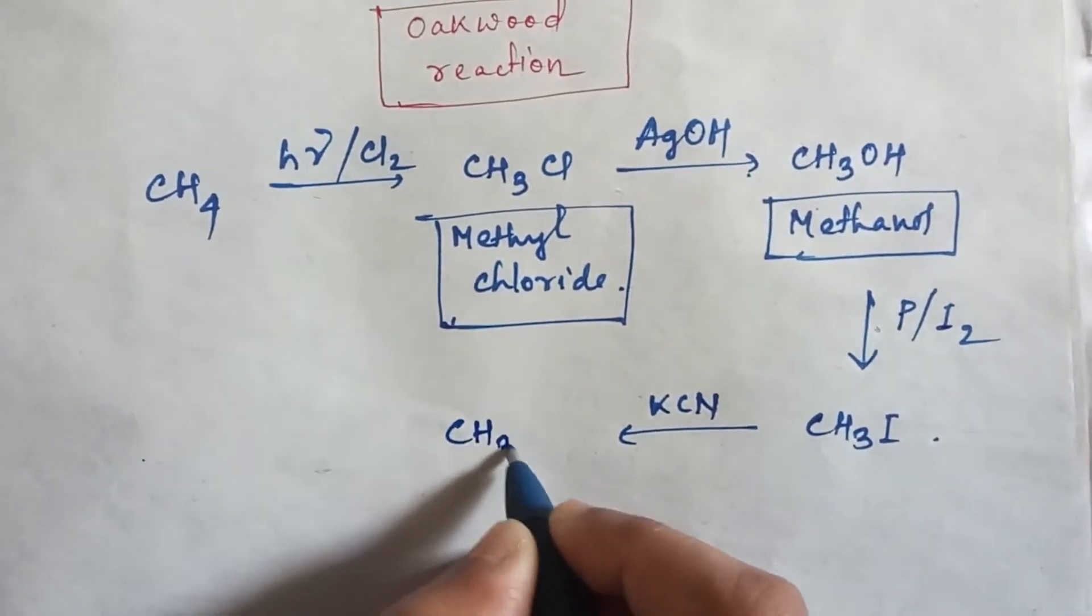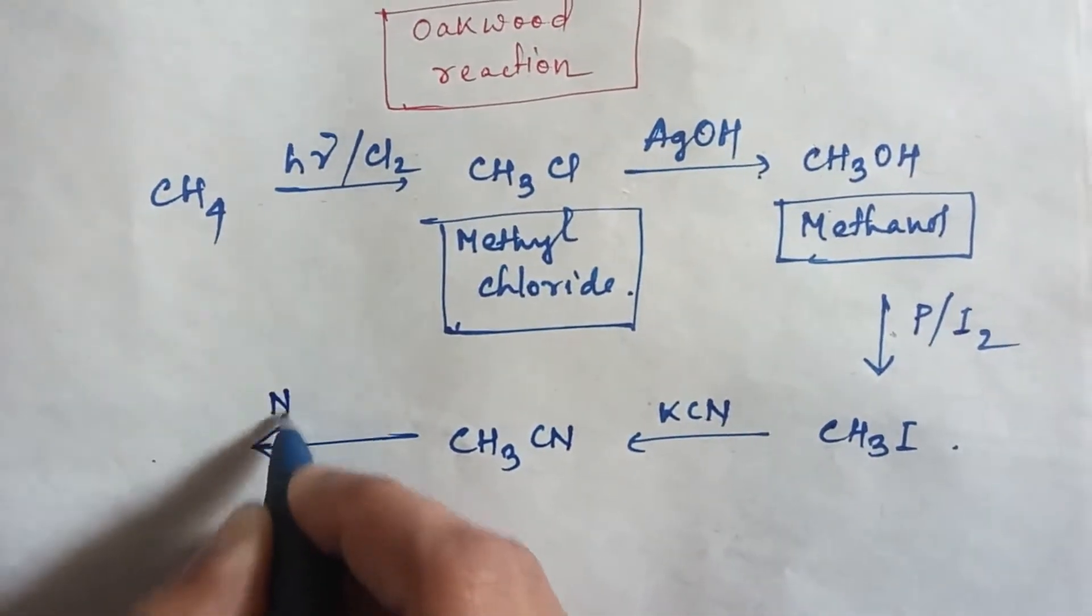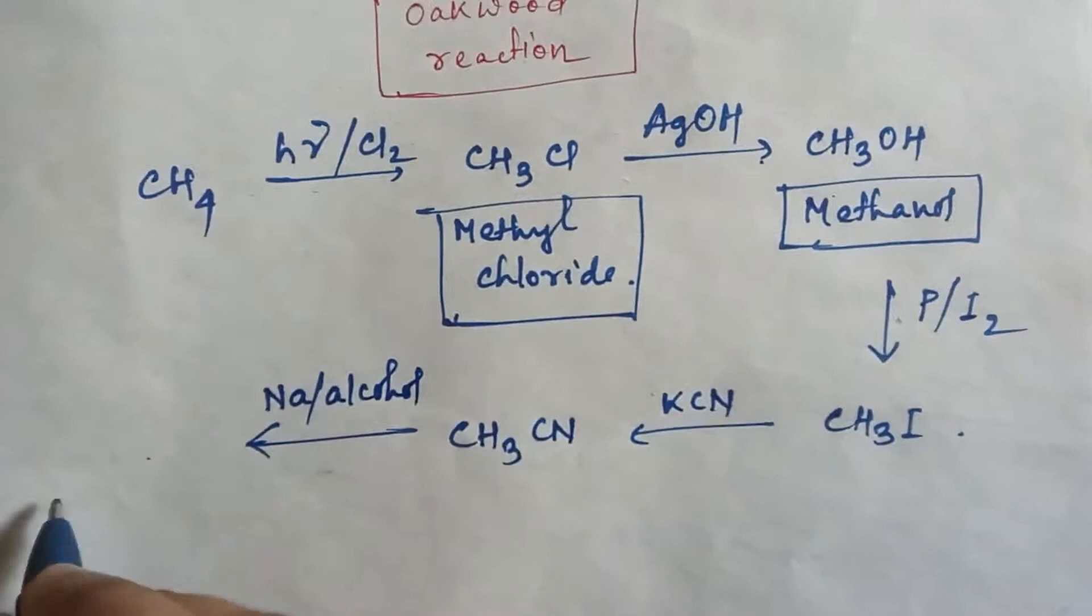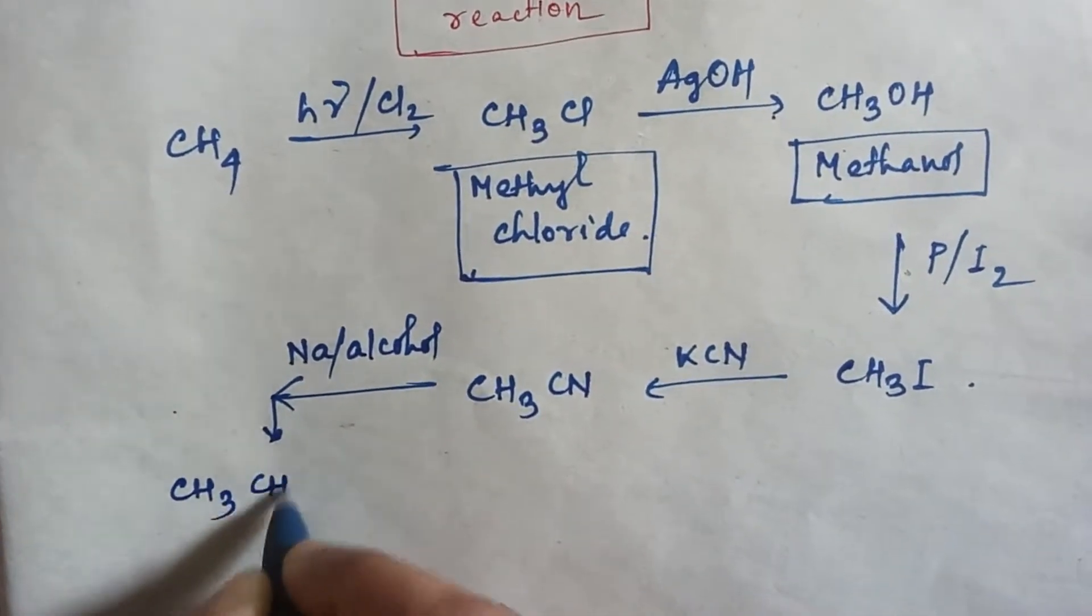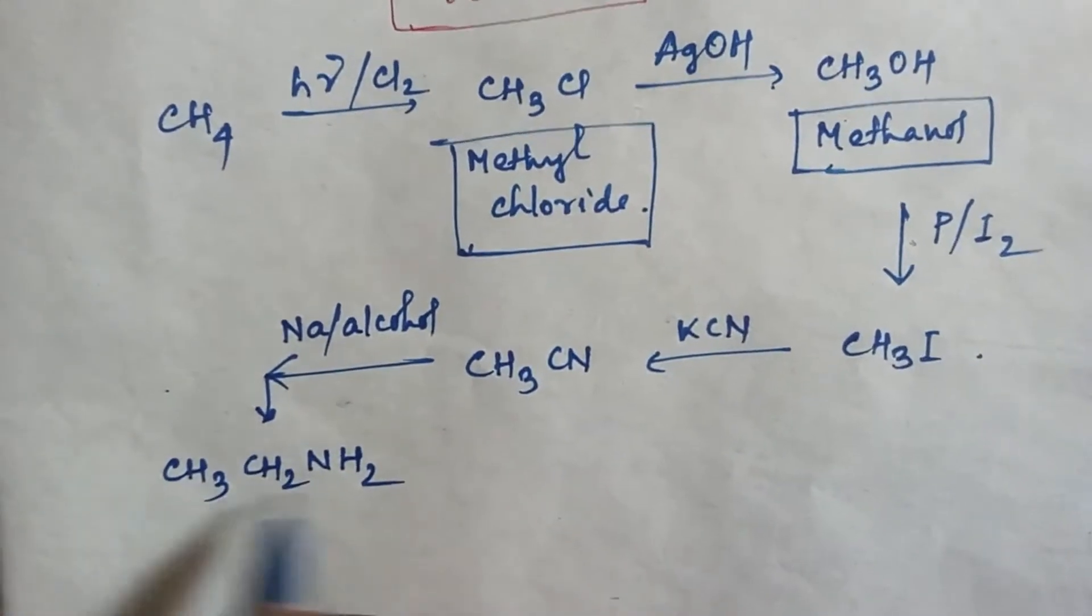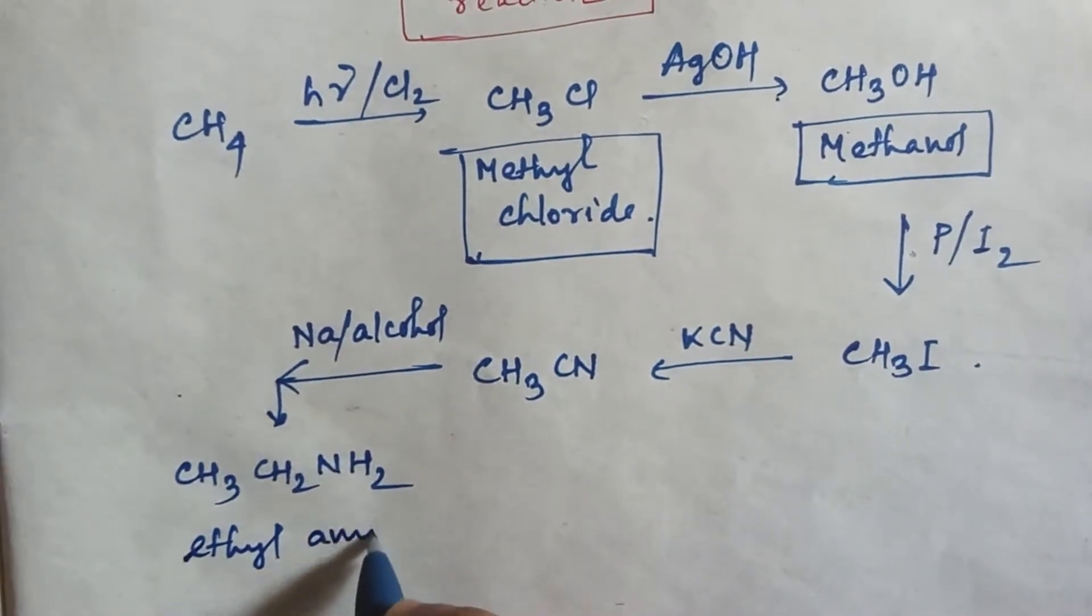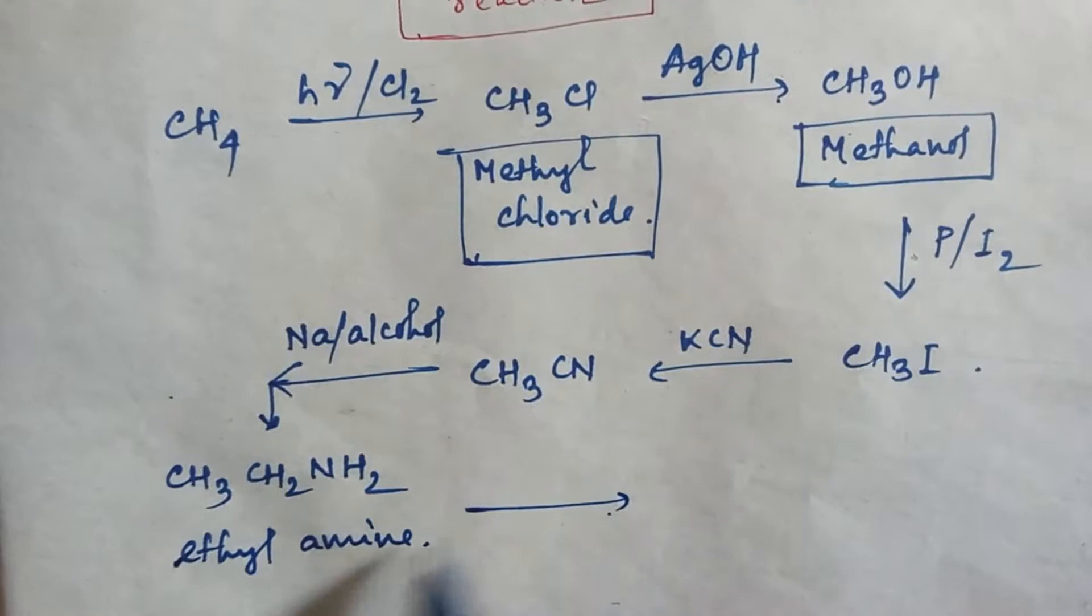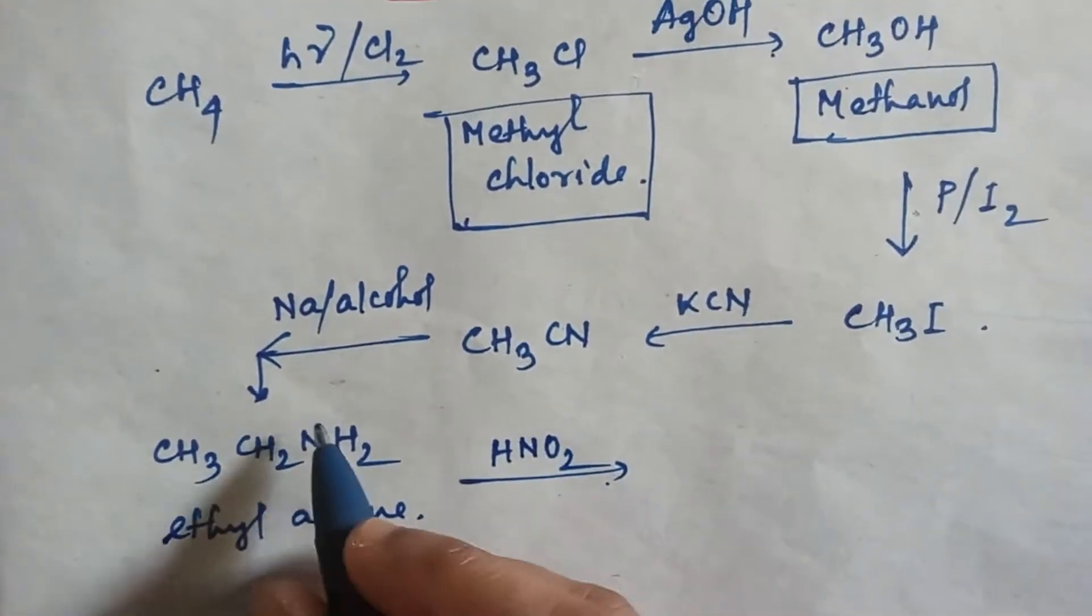If you do reduction by adding sodium and alcohol, then you will get the product CH3CH2NH2, ethylamine.